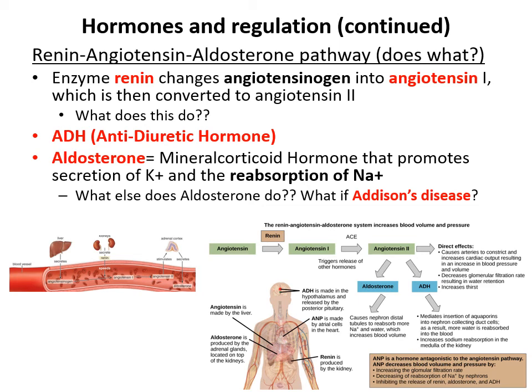ADH and aldosterone help you absorb and hold on to more water. Patients with Addison's disease have a failing adrenal cortex that cannot properly produce aldosterone, causing trouble regulating blood volume, blood pressure, and electrolyte and water absorption.